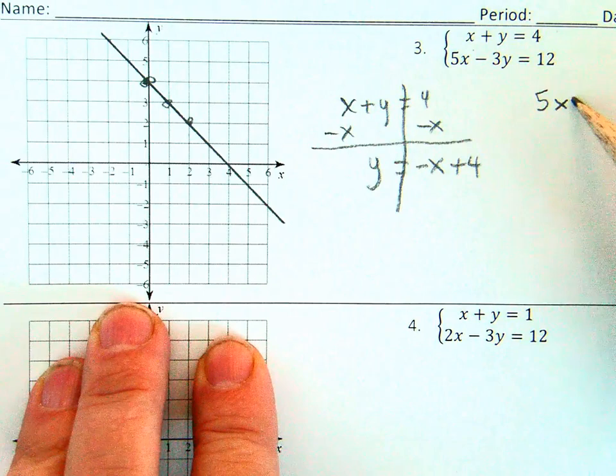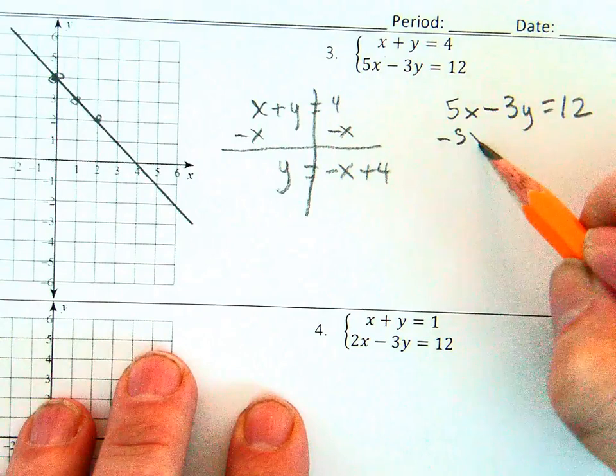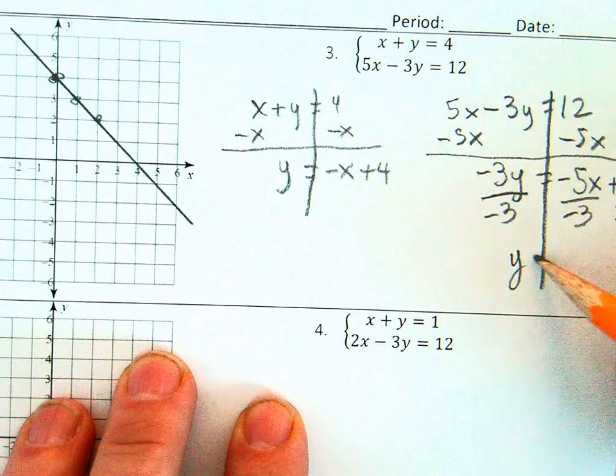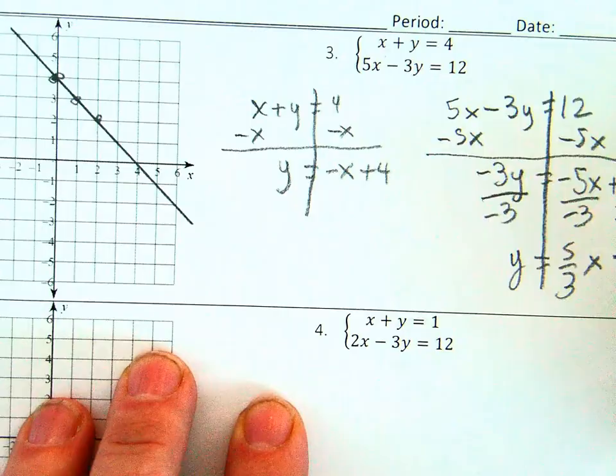In the second equation, once again, subtract the x-term first from both sides. Now divide both sides by negative 3. When y is alone, you have slope-intercept form and you can graph the line.